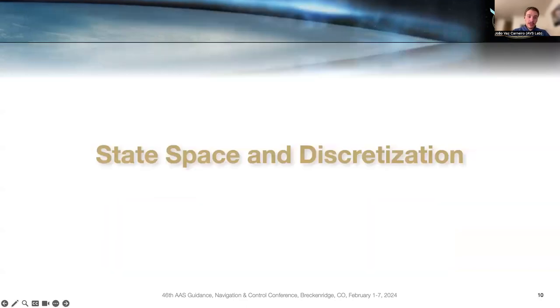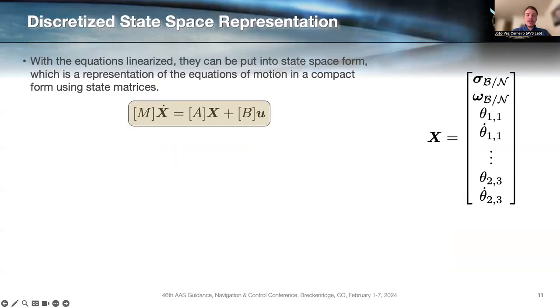From these linearized equations of motion, we need to put them into state space and discretize them. To put them into state space, we write them in this form: M x dot equals A x plus B u, where M is the mass matrix, A is the system's state matrix, and B is the control matrix. You might have seen this written as x dot equals A x plus B u. They are completely equivalent. You just need to invert the mass matrix on both sides.